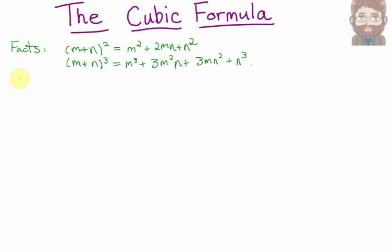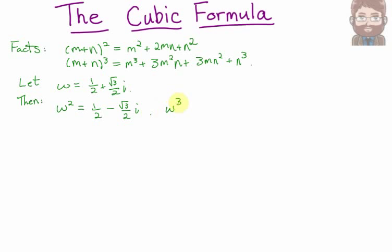Also, we're going to make a definition. Let w be the number 1/2 + (√3/2)i. This is an imaginary number, sometimes called a cube root of unity. It has a few special properties we're going to use. For instance, w² is its own complex conjugate: 1/2 − (√3/2)i. Also, w³ = 1. That's why it's called a cube root of unity.